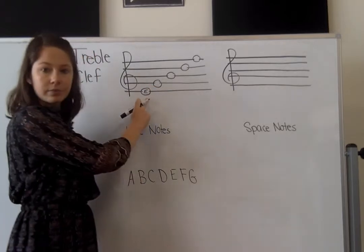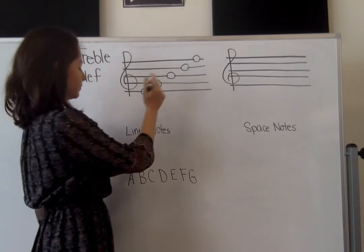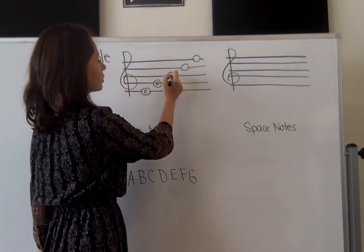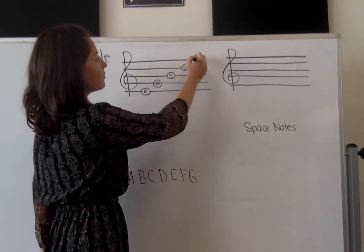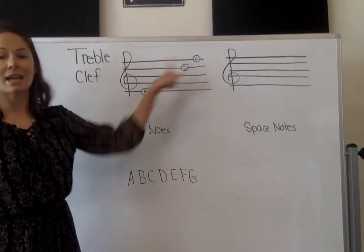on E. First line, bottom line, whatever you want to call it, is E. Second line, G. Third, B. Fourth, D. And fifth, F. E, G, B, D, F.